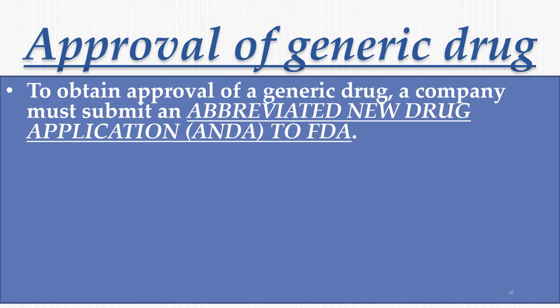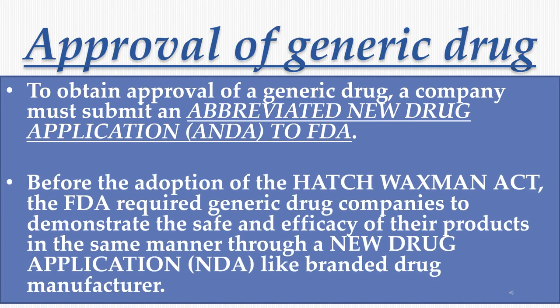Approval of Generic Drug. To obtain approval of a generic drug, a company must submit an Abbreviated New Drug Application (ANDA) to the FDA, Food and Drug Administration. Before the adoption of the Hatch Waxman Act, the FDA required generic drug companies to demonstrate the safety and efficacy of their products in the same manner through a New Drug Application (NDA), like branded drug manufacturers.